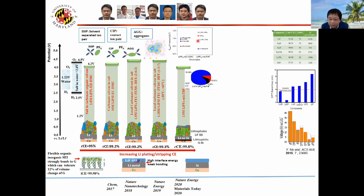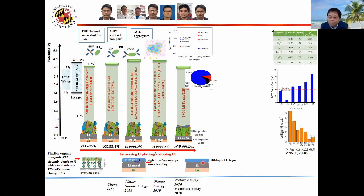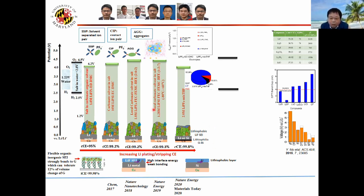We're doing the same approach for silicon — using the same composition. The idea is if silicon works, it should be universal for all high capacity alloy anodes. The ICI should be less bonded with the silicon, and we think the best choice is lithium fluoride. Even with lithium deposition, if you have lithium fluoride it's still good because it can suppress lithium dendrites.